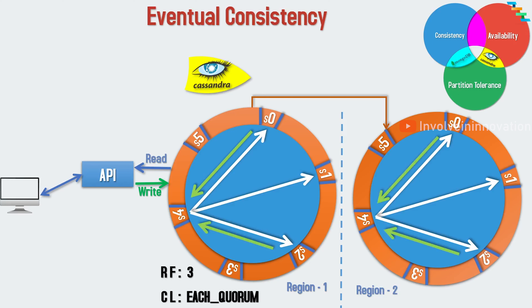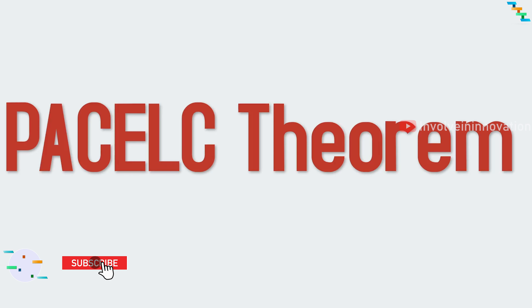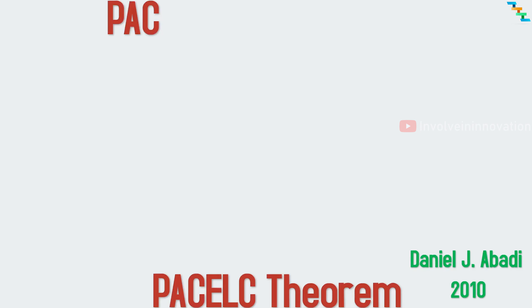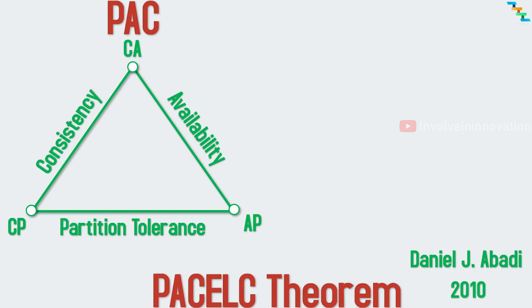Now we have seen what CAP theorem is, and what strong consistency and eventual consistency are with MongoDB and Cassandra. Now we will see about the PACELC theorem. The CAP theorem states that in a distributed system, whenever there is an issue, we can either achieve consistency or availability, but it fails to consider system operation in the normal state. The PACELC theorem was proposed by Daniel J. Abadi in 2010 to address the correlation between latency and consistency in normal operations of a distributed system.